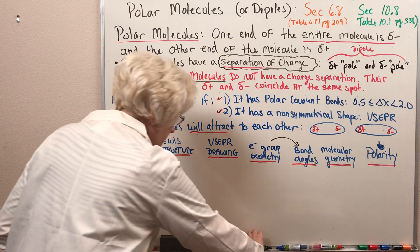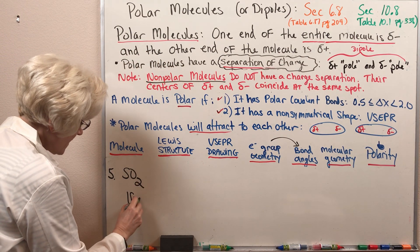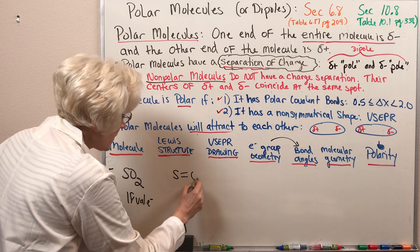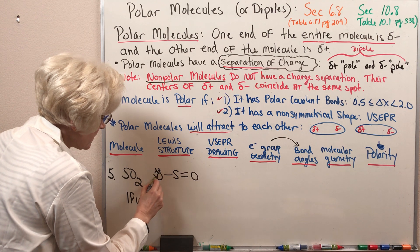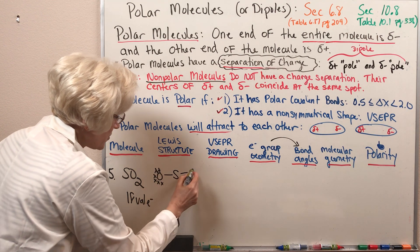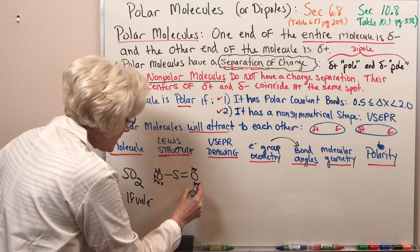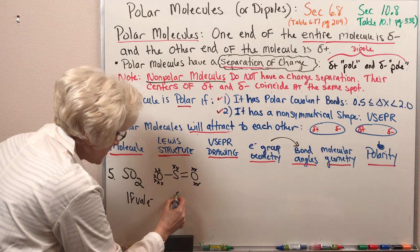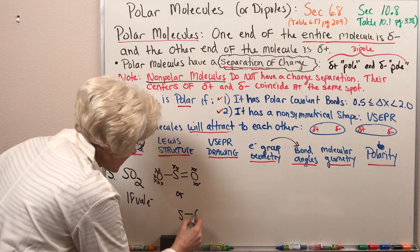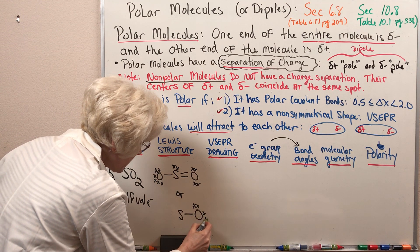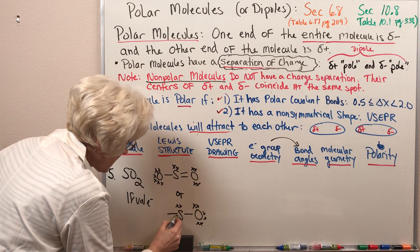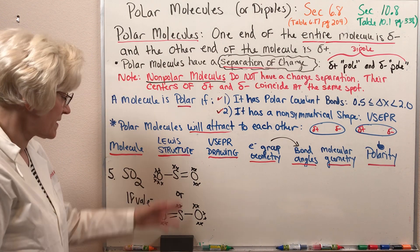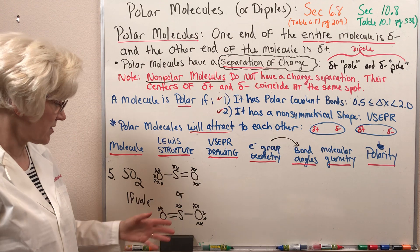If we draw the Lewis dot structure for sulfur dioxide, it has 18 valence electrons. We're going to see that we could come up with two different resonance structures for the molecule. Putting them both up here, examining these resonance structures, we can see that they are equivalent or identical to each other.